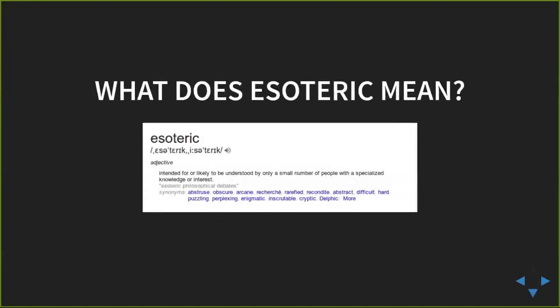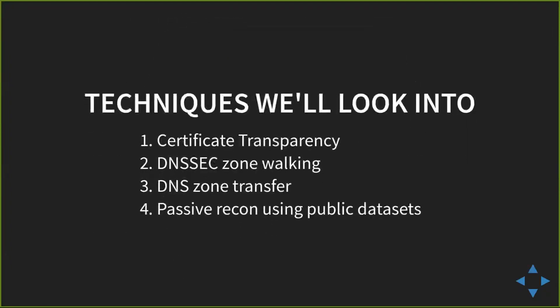What we're covering today is esoteric — intended to be understood by a small number of people with specialized knowledge. These techniques are already used by a few people; they're not highly unknown. But when I talk to investors and security professionals, many don't understand or use them. A few use them via tools like ReconNG without understanding the technique itself. The four techniques I'll cover are: certificate transparency, DNS zone walking, DNS zone transfer, and passive reconnaissance using public datasets.